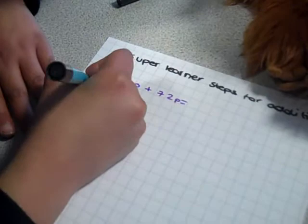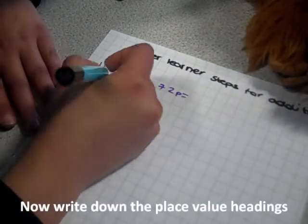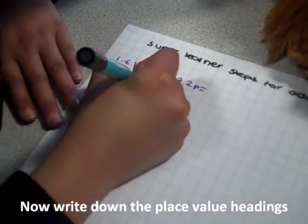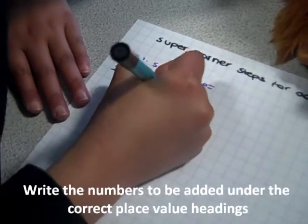Write the place value headings: units, decimal point, tenths, hundredths. Write the sum underneath the place value headings.